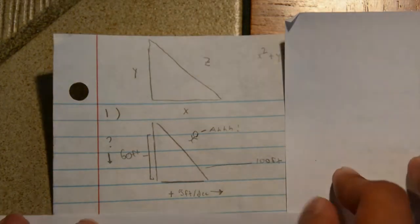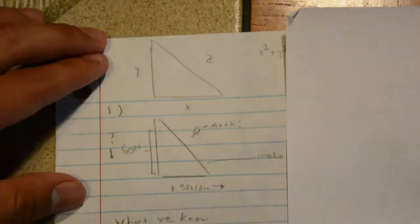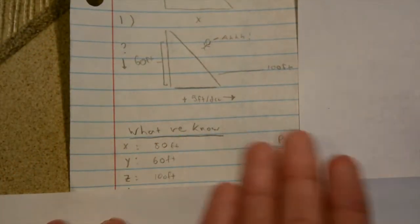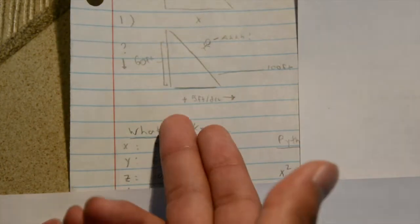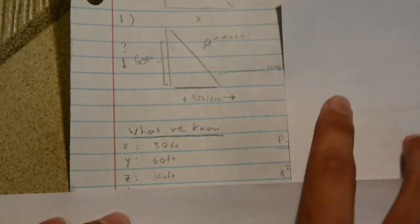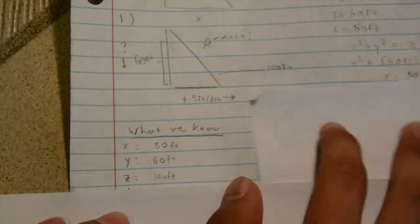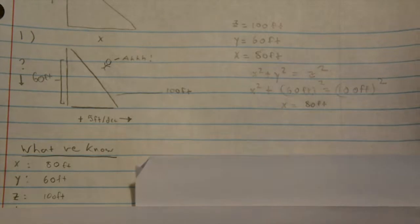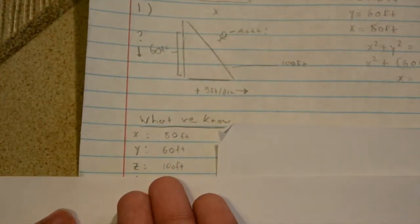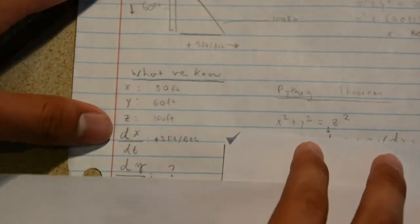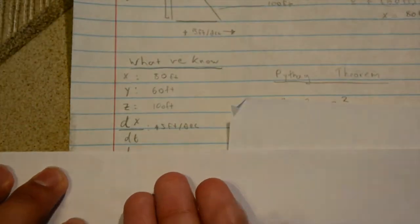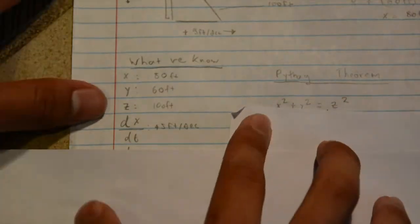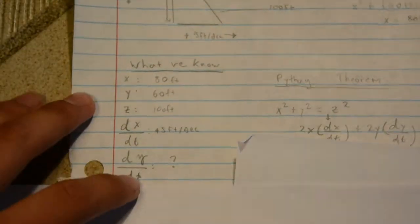Here we have a picture of Mr. Ferrari, and we have the height that we're trying to find marked with a question mark, because we're trying to find how fast the ladder is falling down the wall. We're also given how fast it's moving away from the wall, and we're given the length of the ladder. We can see what we know, starting with the three basic things: x, y, and z.